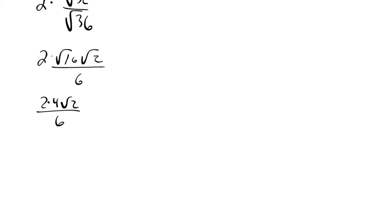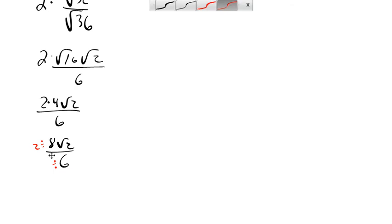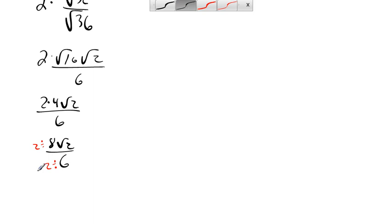Square root of 16 is 4, so 2 times 4 times radical 2, all over 6. That gives us 8 radical 2 over 6. We don't want to leave it like that — we have an 8 over 6, so we want to divide by a common factor. Since 2 goes into both 8 and 6, I divide the top and bottom by 2.